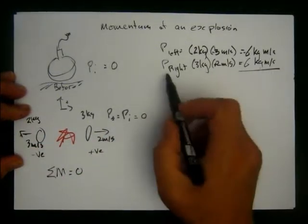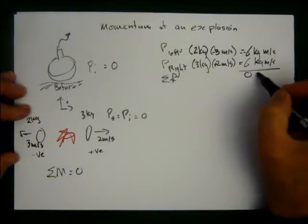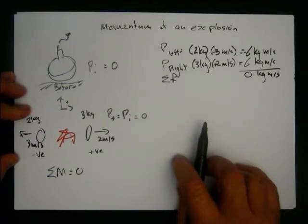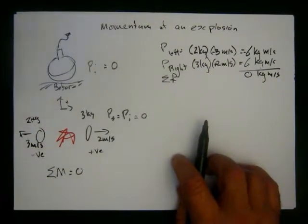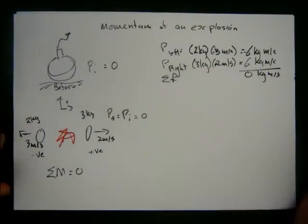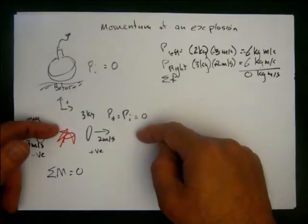Sum of the momentum, if I just add these up, equals zero. Isn't that cool? So we'll just do a couple of examples in a second. But the big thing to remember is with explosions, conservation of momentum is still observed. Momentum before equals momentum afterwards.